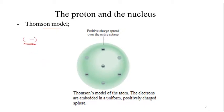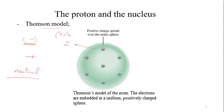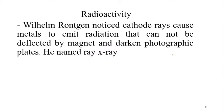Thomson said that if there are negative particles in the atom, the atom must also contain positive particles, because it is neutral. He proposed that the negative particles are embedded like dots in a very large sphere of positive charge — so the big sphere is the positive region and the electrons are just like dots embedded in that large sphere.